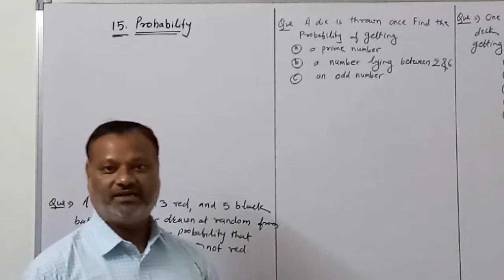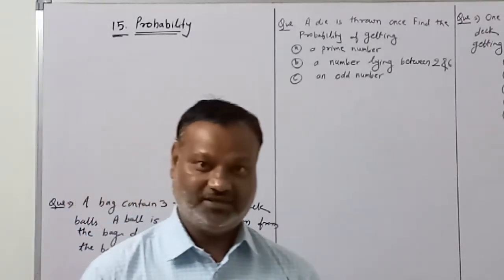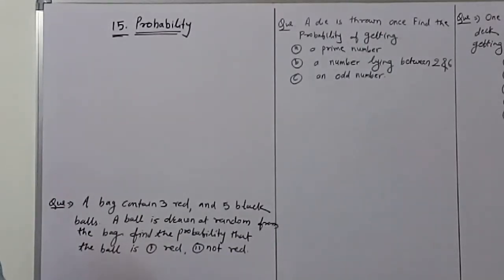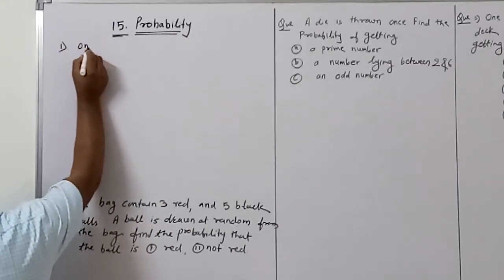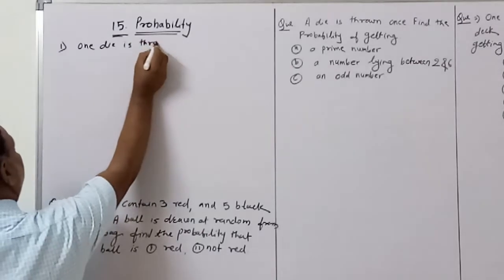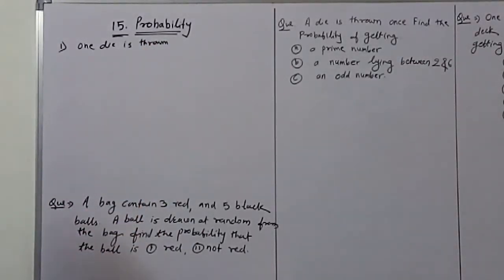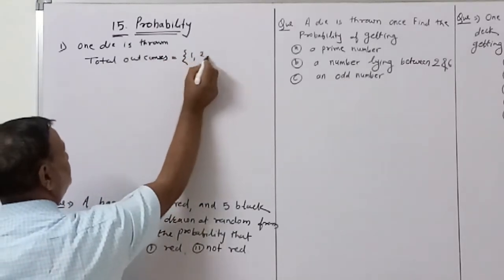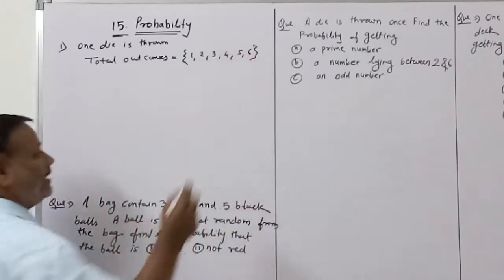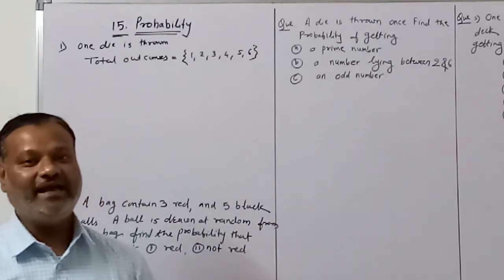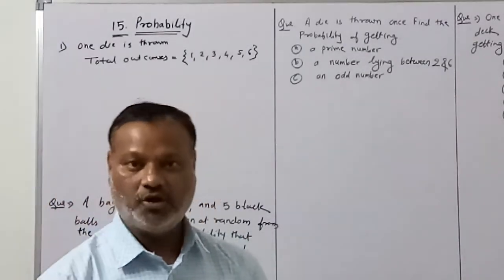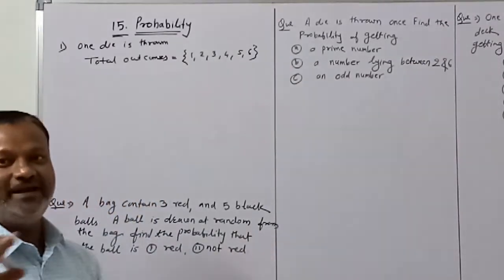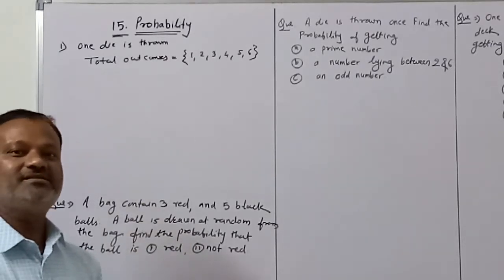I already explained: if one coin is tossed, what is the total number of observations? If two coins are tossed? If three coins are tossed? Now, if one die is thrown, the total outcomes are 1, 2, 3, 4, 5, and 6, because a die has six surfaces, each containing dots - one dot, two dot, three dot, four dot, five dot, six dot.